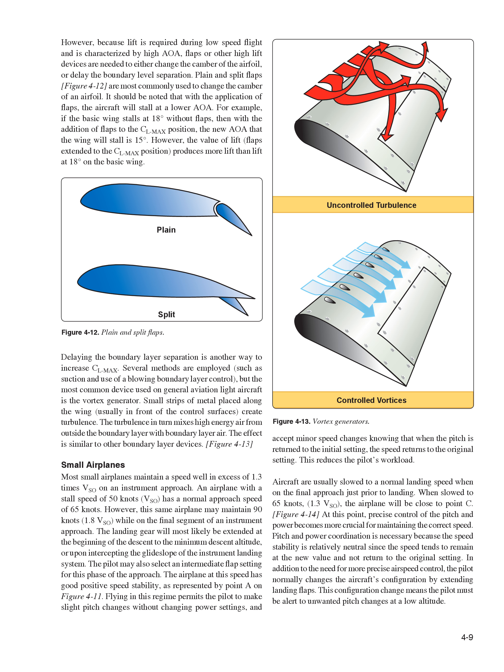An airplane with a stall speed of 50 knots (VSO) has a normal approach speed of 65 knots. However, this same airplane may maintain 90 knots (1.8 VSO) while on the final segment of an instrument approach. The landing gear will most likely be extended at the beginning of the descent to the minimum descent altitude, or upon intercepting the glide slope. At 90 knots, the airplane has good positive speed stability. Flying in this regime permits the pilot to make slight pitch changes without changing power settings, and accept minor speed changes knowing that when the pitch is returned to the initial setting, the speed returns to the original setting, reducing the pilot's workload.